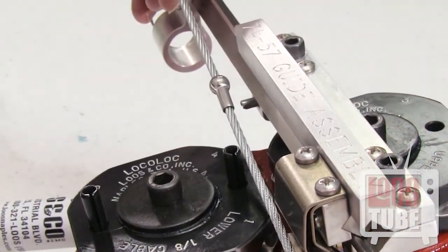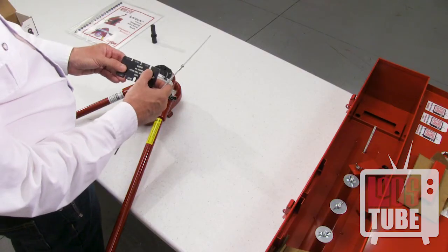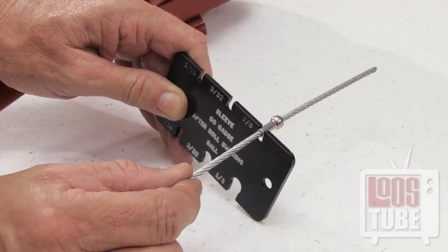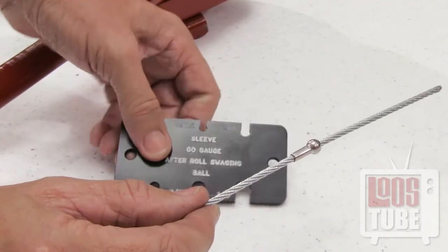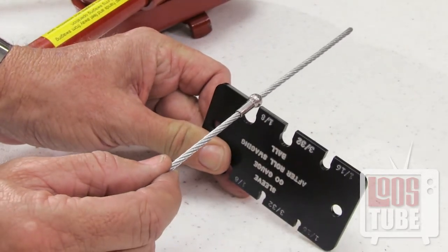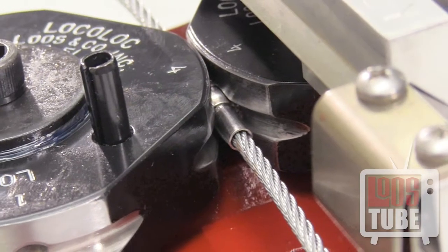Your ball end terminal is now ready to use. Check the after-swaged dimensions of the ball and the shank. They should pass easily through the grooves on the attribute gauge. If further reduction is necessary, rotate the swaged fitting 90 degrees again and pass it through the number 4 position a second time.